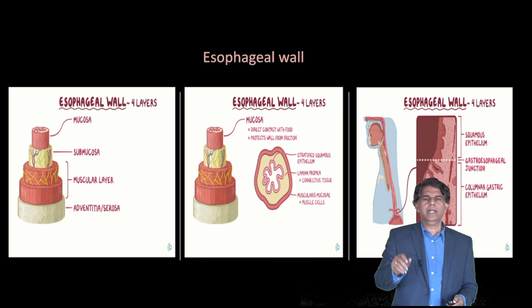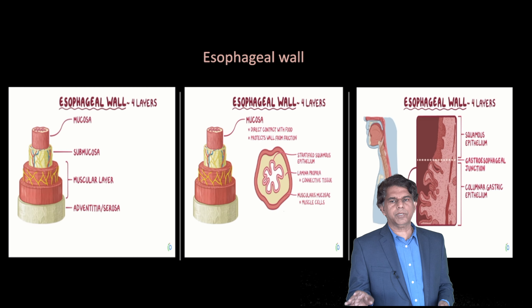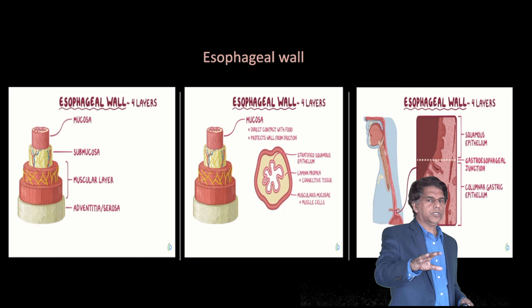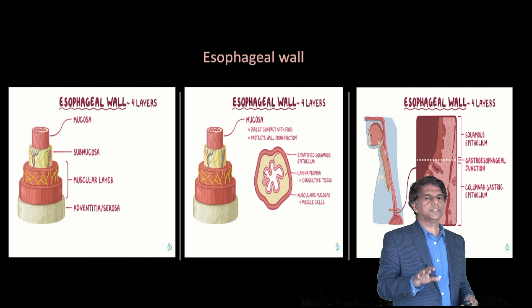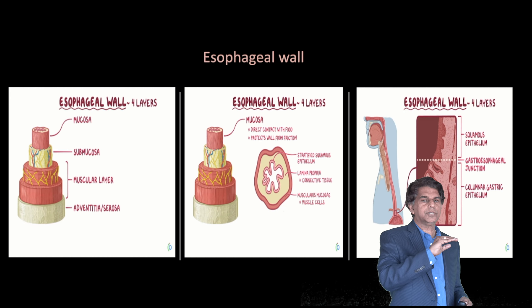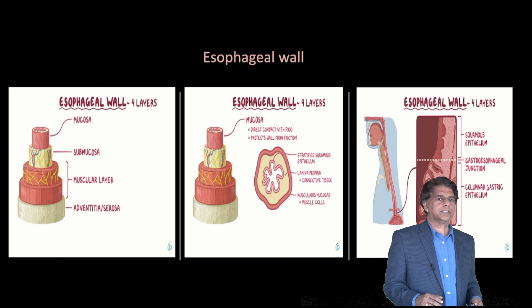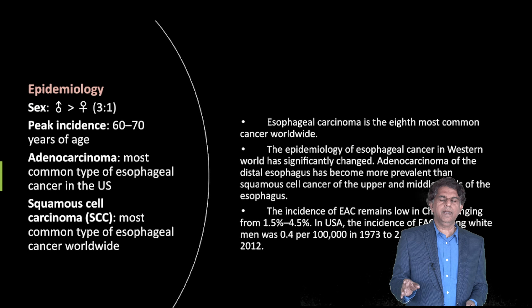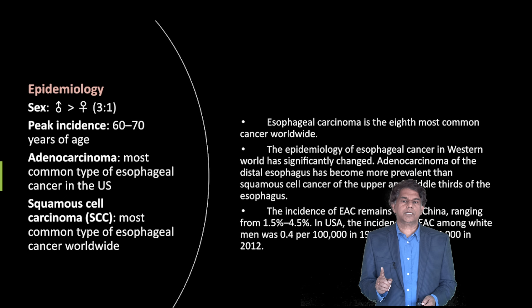Briefly, the esophageal wall structure includes the mucosa, submucosa, muscular layer, and adventitia. Within the mucosa there are several parts. The esophageal wall layers include squamous epithelium up to the gastroesophageal junction, and then columnar gastric epithelium lining.